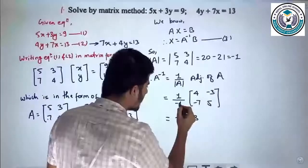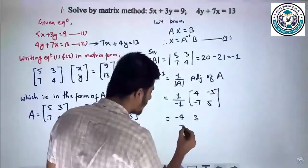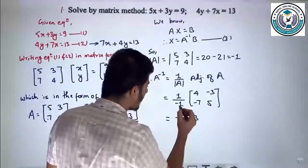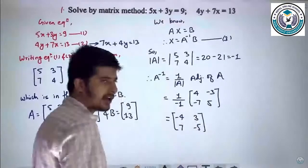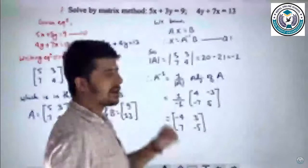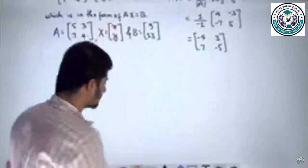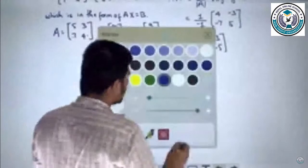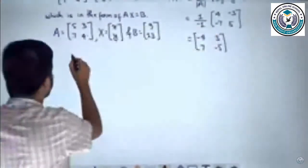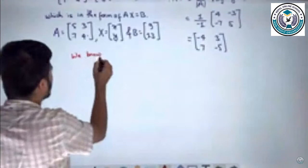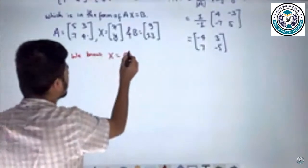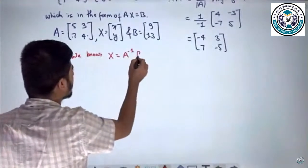Minus 1 when we go, save in 5 by minus 1 when we go, minus 1. So, A inverse i. We know x equals to A inverse b.